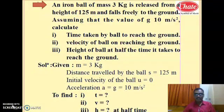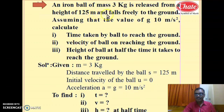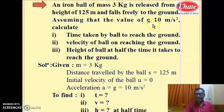Let us start a problem based on free fall condition. An iron ball of mass 3 kg is released from a height of 125 meters and falls freely on the ground, assuming that the value of g is 10 meter per second square. So here mass of the ball is 3 kg, height is 125 meters, and acceleration due to gravity is 10 meter per second square.